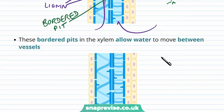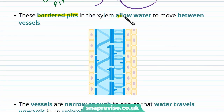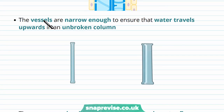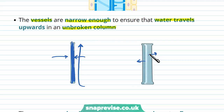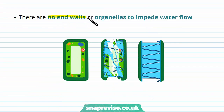The bordered pits allow water to move between vessels and change direction. Another important feature is that the vessels are narrow enough to ensure the water travels upwards in an unbroken, continuous column. Because the tube is narrow enough, water travels from the roots through the tube in a continuous flow with no gaps. If the tube were made wider, the water would travel in broken columns without the energy or stability to maintain flow, leading to gas bubbles and displaced gas in the plant. There are also no end cell walls in the dead cells, and no organelles or cytoplasm to impede water flow, so water can flow freely from one end to another very easily.